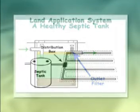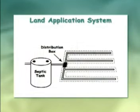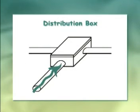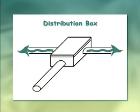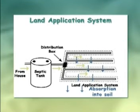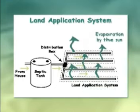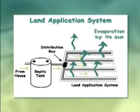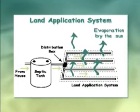The land application area generally consists of a distribution box connected to slotted pipework which is embedded in disposal trenches. Here the effluent is released into the environment by absorption into the soil, then through transpiration up through the grasses and evaporated by the sun.